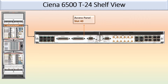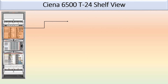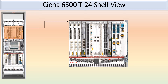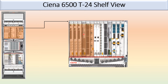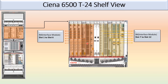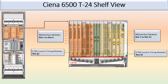You can clearly see the access panel. This is the bigger picture of the interface module — slot 1 through 6, where you can install any traffic card or photonic module. Slot 7 to slot 12 is also the interface module, where you can put either a photonic module or a traffic module. Slots 41 and 42 are the CTM, control and timing module.